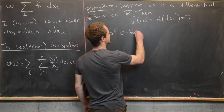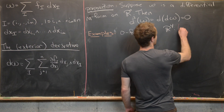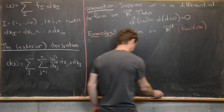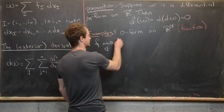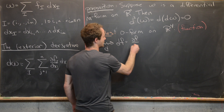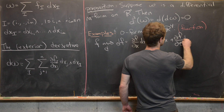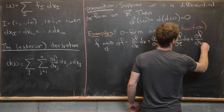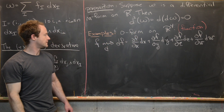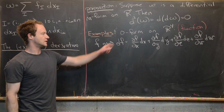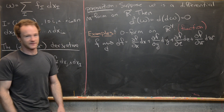Starting with a 0-form on R^4 — notice that's just a function. So a 0-form is another name for a function. We apply the exterior derivative to f and get df, which equals the partial of f with respect to x dx, plus the partial with respect to y dy, plus the partial with respect to z dz, plus the partial with respect to w dw. Here we use coordinates dx, dy, dz, dw. That's the derivative of the 0-form; notice we get a 1-form. Now we apply d again to find d squared f.